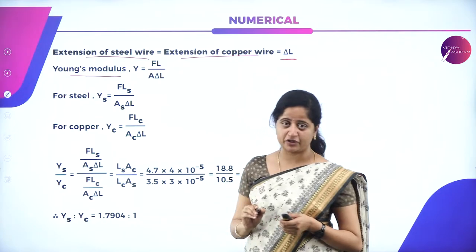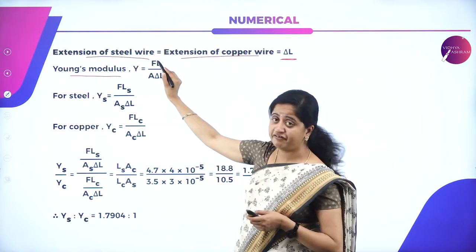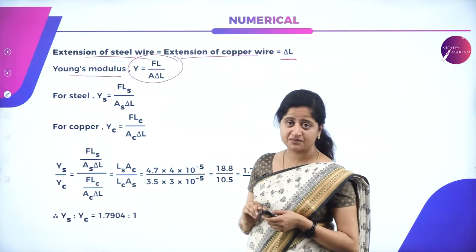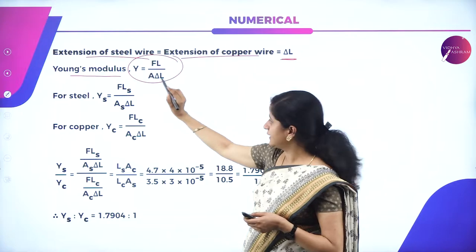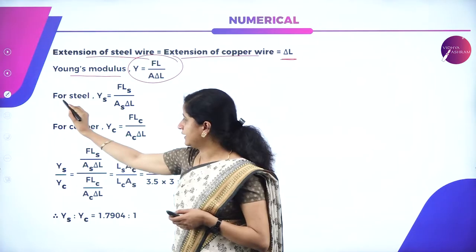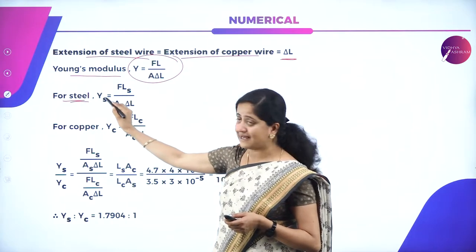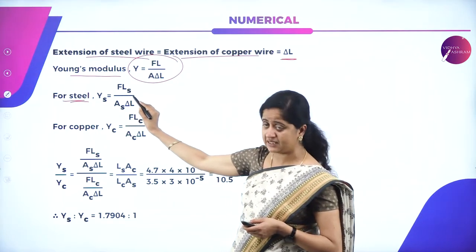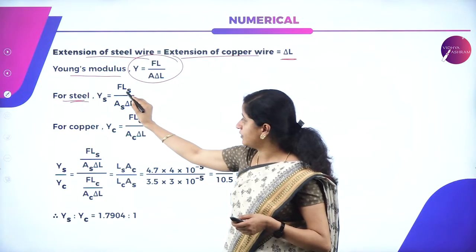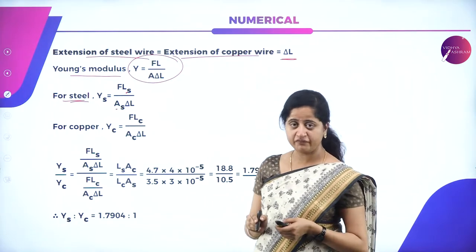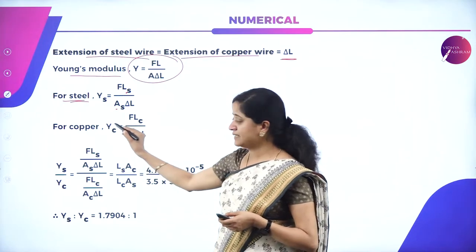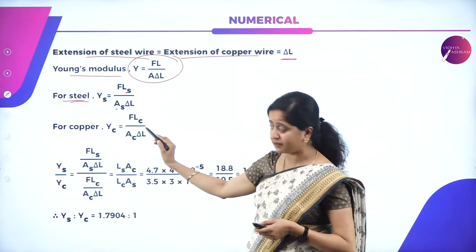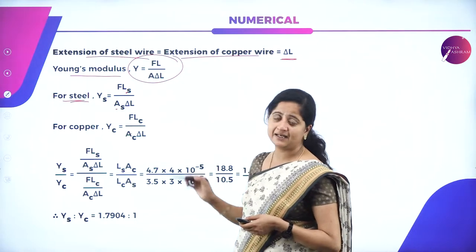The formula for Young's modulus is Y = FL / (A × delta L), where Y is Young's modulus, F is force, L is length, A is area of cross-section, and delta L is change in length. For steel: Y_S = (F × L_S) / (A_S × delta L), where L_S is the length of the steel wire and A_S is the area of cross-section of the steel wire.